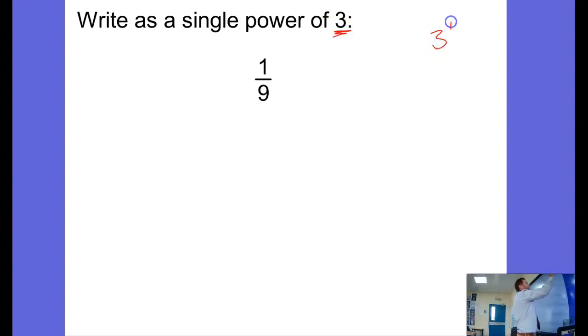Well I know 3 to the power of 1 is 3. I know 3 squared is 9. I know 3 cubed is 27. 3 to the power of 4 is 81. To work these out you times by 3 as you go down if you're not sure.